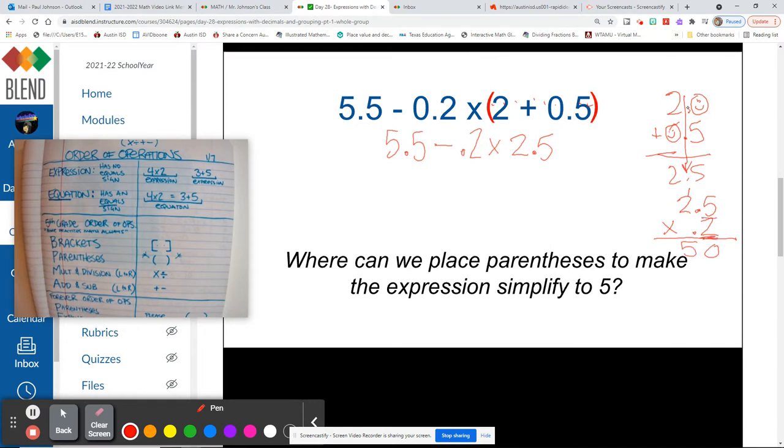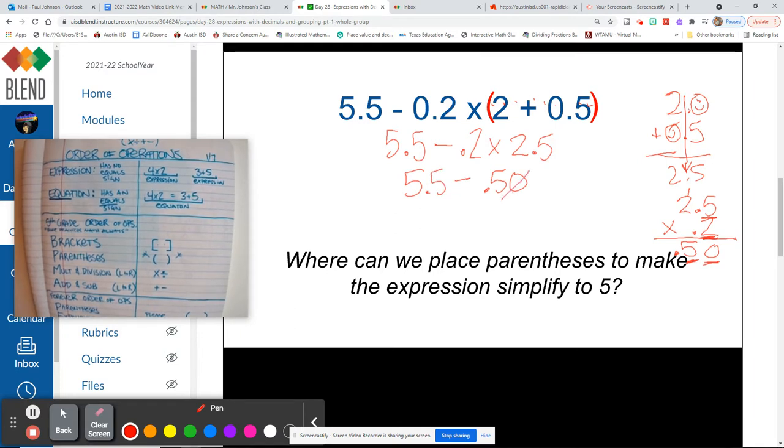We have 2 decimal places in our problem, so we need 2 decimal places in our solution. So we have 50 hundredths. So this is 5.5 minus 50 hundredths. Remember 50 hundredths is the same thing as 5 tenths, so 5.5 minus 5 tenths is 5.